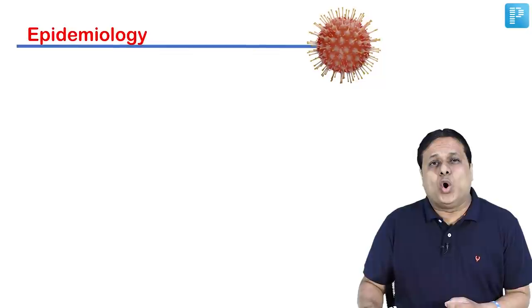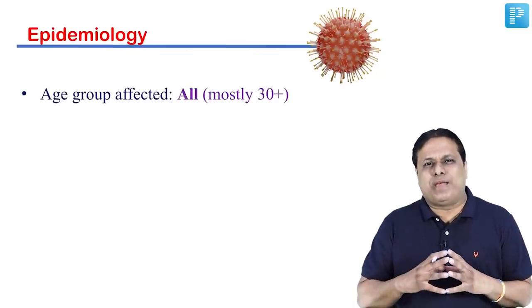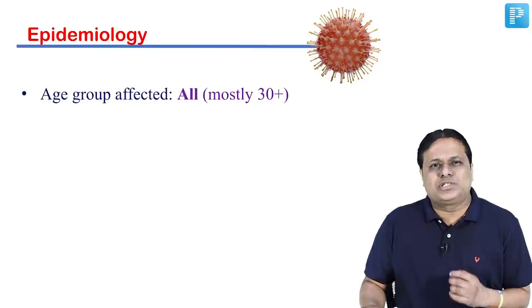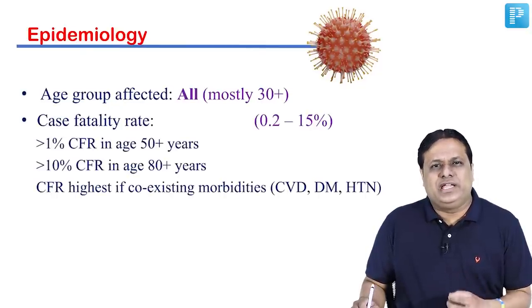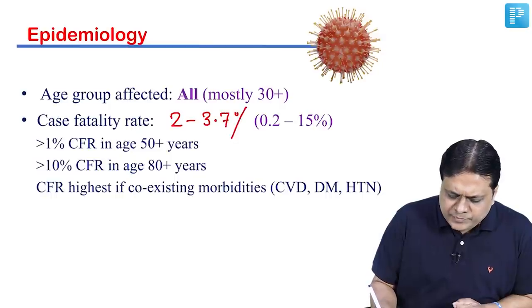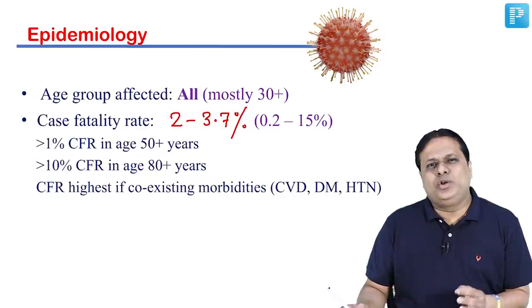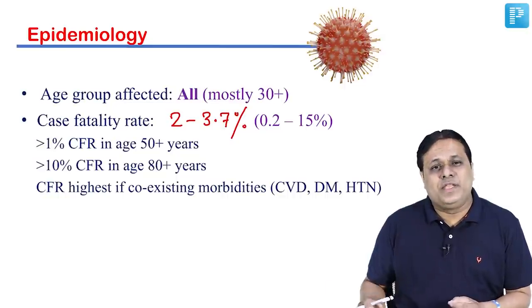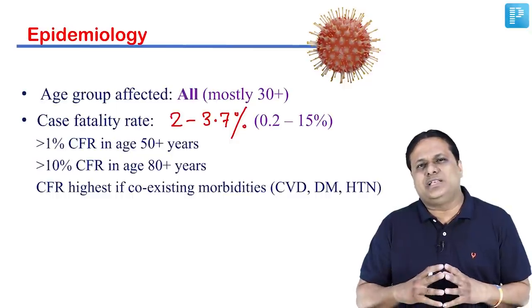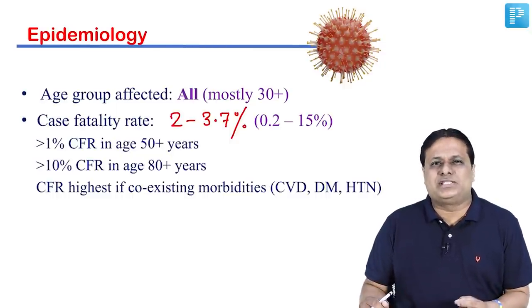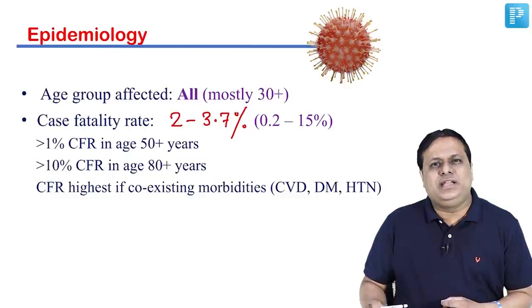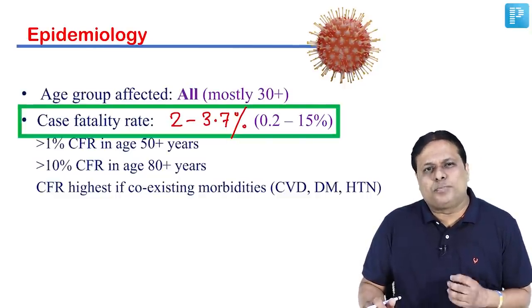Almost all age groups are affected, but looking at the pattern in India and globally, mostly adults aged 30 years and above are mostly affected. The case fatality rate has been reported to be around 2 to 3.7%, with a wide range from 0.2 to 15%. Case fatality is higher as age increases or if the case has comorbidities, especially diabetes, hypertension, or any cardiovascular event. Take-home point: case fatality rate of COVID-19 is 2 to 4%.